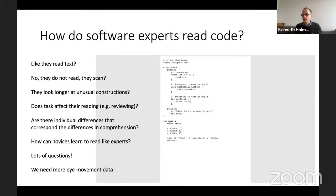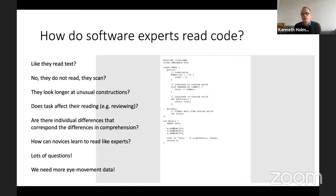Are there individual differences? I would suspect so. And how can novices learn to read like experts? Can we show the expert gaze pattern so novices can learn from it? It's an important research question. Generally, this field of reading source code is at the very beginning compared to reading classical texts, which has been going on for about 80 years. We need more eye movement data and more projects. So that was my talk, and I'll be happy to take questions.